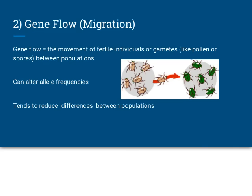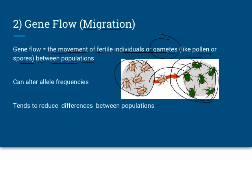The second factor is gene flow or migration — the movement of fertile individuals or gametes between populations. Gametes include egg and sperm; pollen is plant sperm and spores are the reproductive cells of many fungi. For example, if I have a brown beetle population and a green beetle population, and one brown beetle migrates into the green population, now I have a different set of alleles. This change is not due to natural selection but to gene flow. Migration tends to reduce the differences between populations over time.